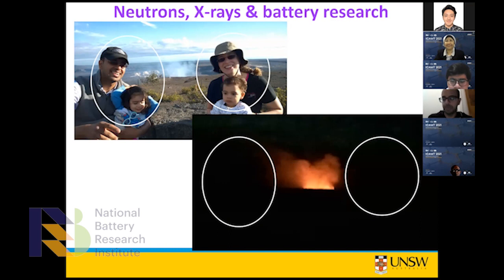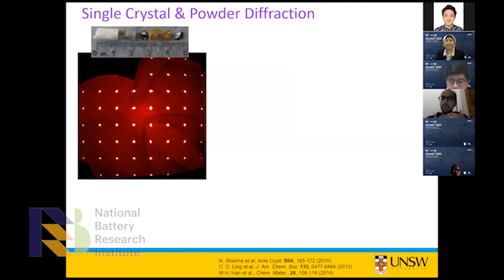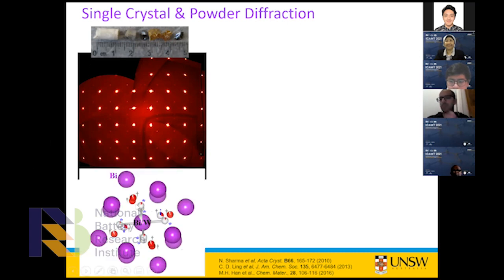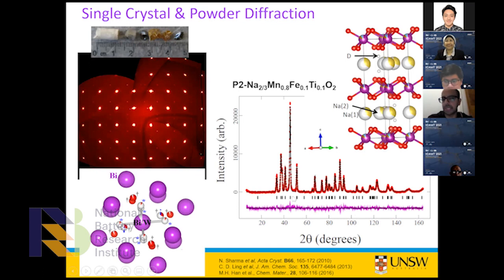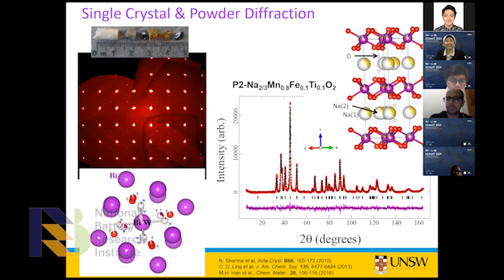For diffraction and long-range order, if you have a single crystalline material you can get beautiful single crystal diffraction data which you can use to unambiguously solve a crystal structure — looking at lattice parameters and what atoms are present. Once you go from single crystal to a powder, you're fitting a model to the data. This is called a Rietveld refinement — the model is the black line, the red crosses are the data, and the purple is the difference. It's not unambiguous; it's a model fit to the data.